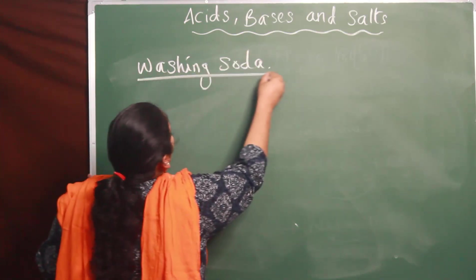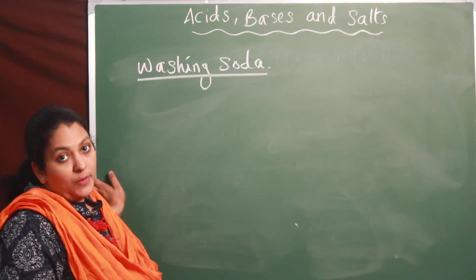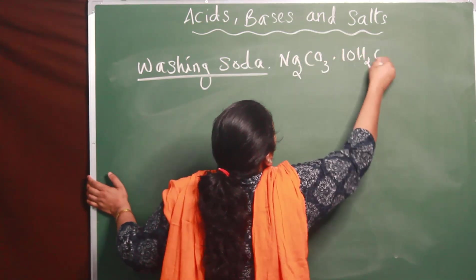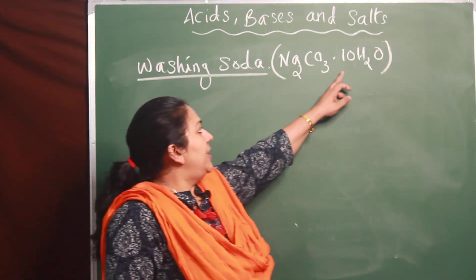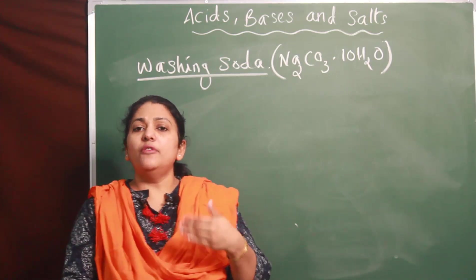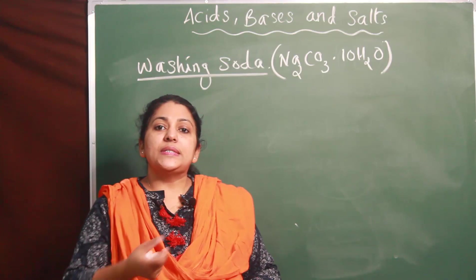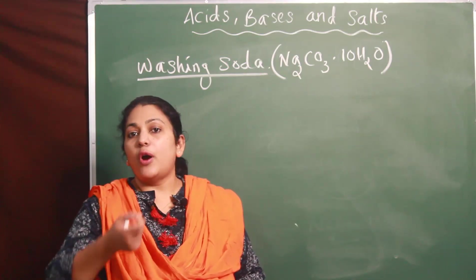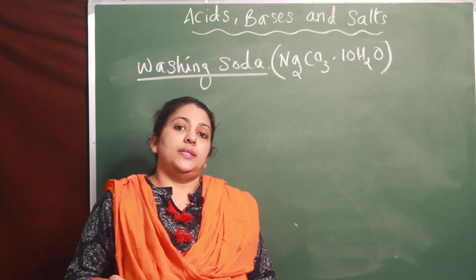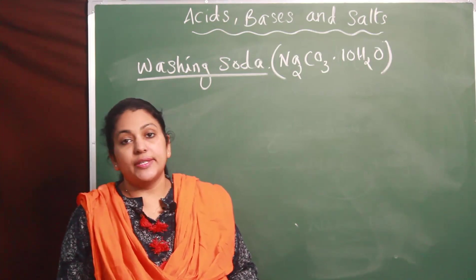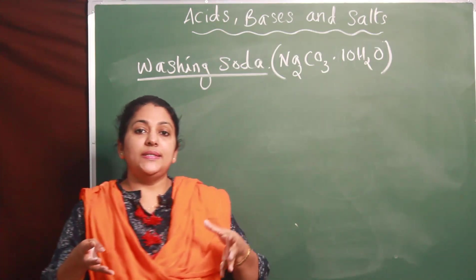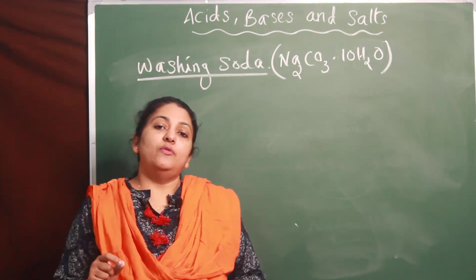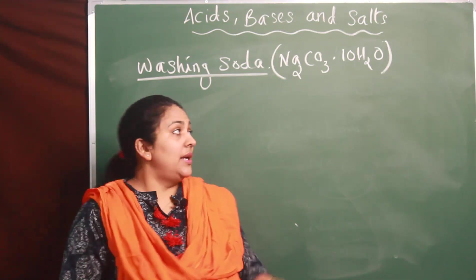Washing soda has a chemical formula Na2CO3·10H2O. Now you may have a doubt - what is this 10H2O in a chemical formula, how can water molecules come within? Don't worry, there are salts having some molecules of water within their structure. These are called hydrated salts, and this water molecule present along with the chemical formula is called water of crystallization.